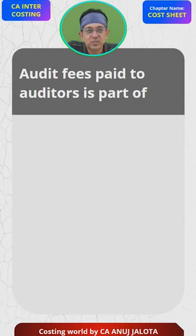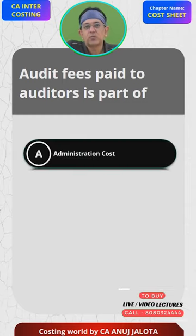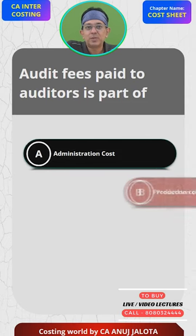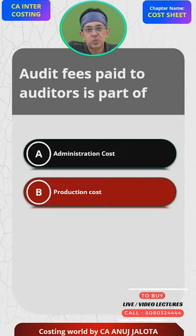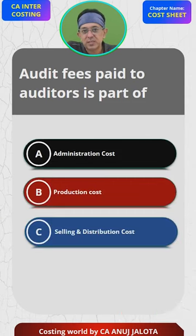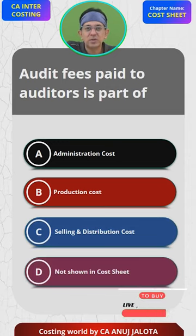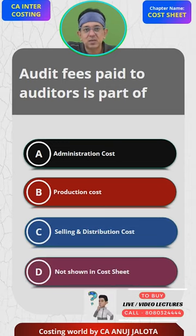Audit fees paid to the auditor is part of which option? Option A: administration cost, Option B: production cost, Option C: selling and distribution cost, or Option D: not shown in the cost sheet. Think of the right answer and comment in the comment section before I reveal it.